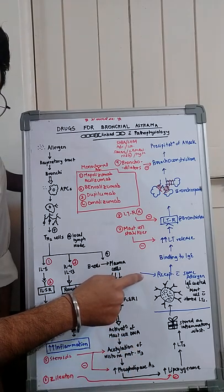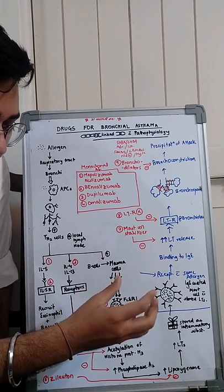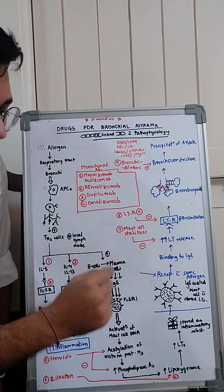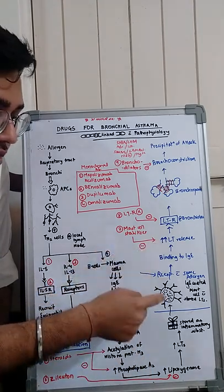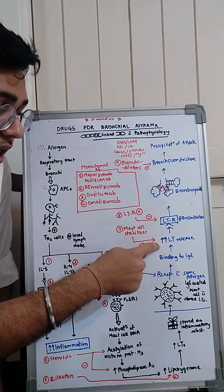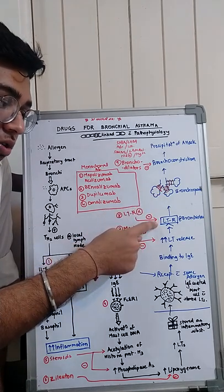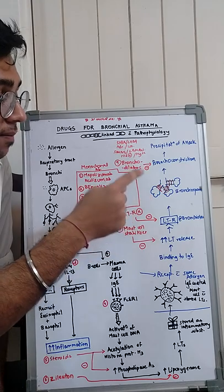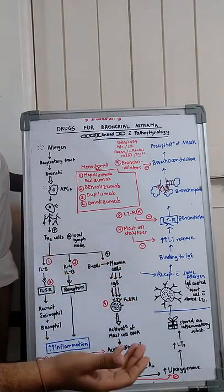Upon re-exposure, the same allergen directly binds to the IgE antibodies already coated on the mast cells. This leads to increased release of the pre-formed leukotrienes stored inside. These leukotrienes bind to leukotriene receptors present in the bronchioles, leading to bronchospasm, bronchoconstriction, and ultimately precipitation of the asthma attack.